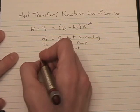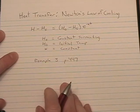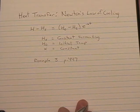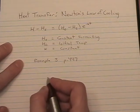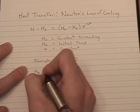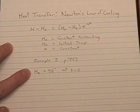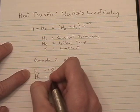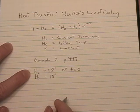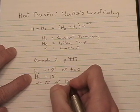In example 3 on page 447, we're looking at a hard-boiled egg that's dropped in a sink full of water, and we want to know when that egg is going to reach 20 degrees Celsius. The hard-boiled egg starts out at 98 degrees Celsius, our initial temperature at time zero. The water is 18 degrees Celsius, that's our surrounding temperature.